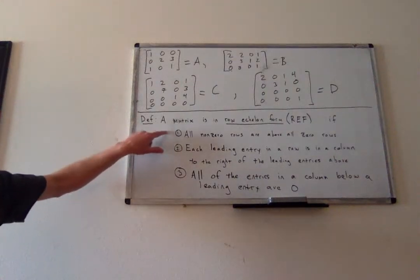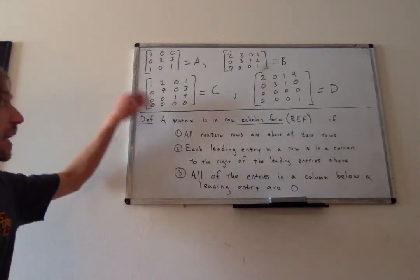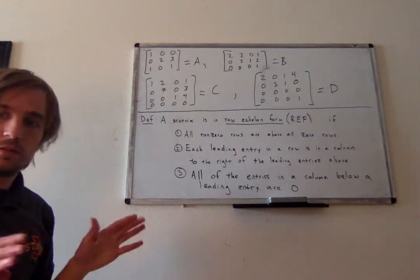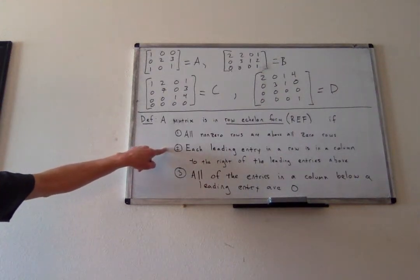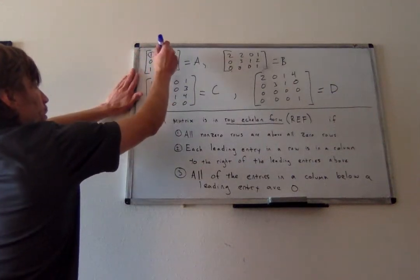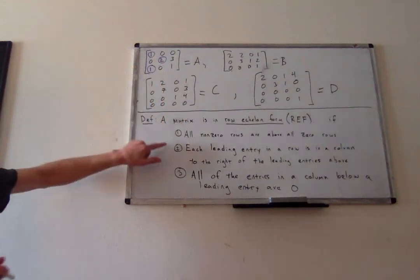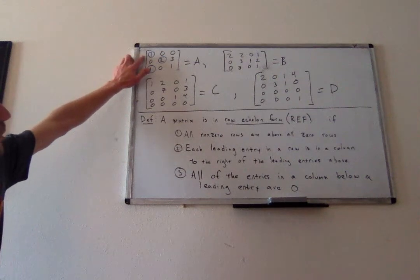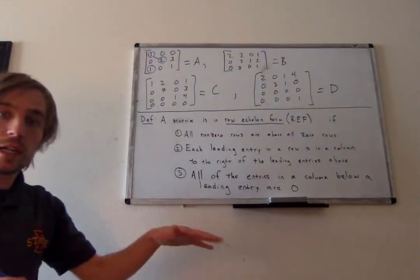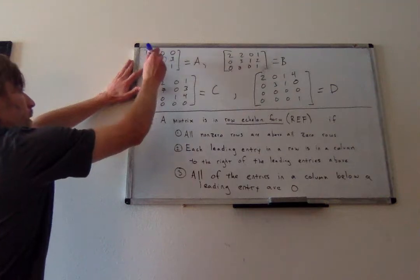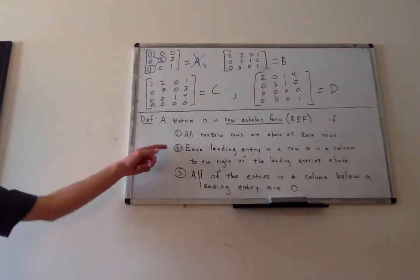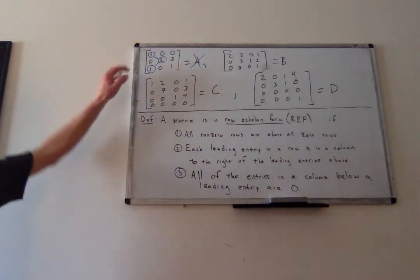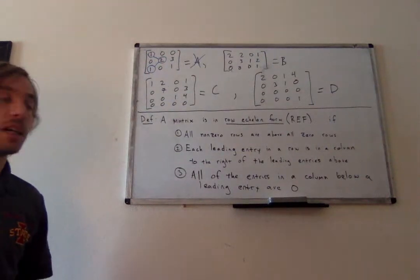Let's look at matrix A first. A does not contain any zero rows, so property one is automatically satisfied. For property two, circling the leading entries: I've got a leading entry of 1 in row 1, but in row 3 I've got a leading entry to the left of the one in row 2. So A would not be in row echelon form because it does not satisfy property two. It also does not satisfy property three because that leading 1 looks down its column and sees a non-zero entry.